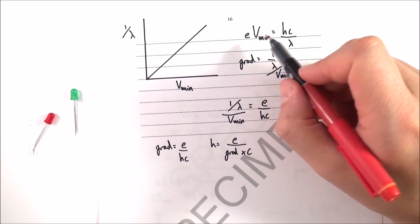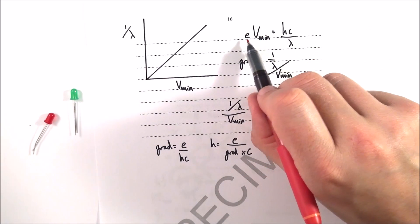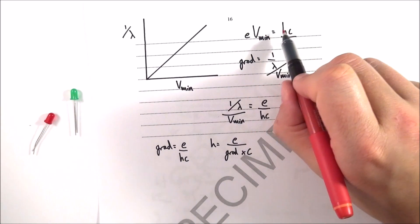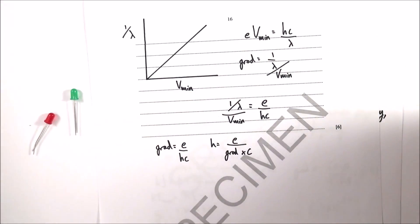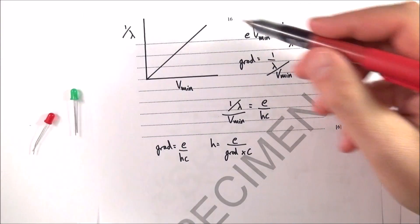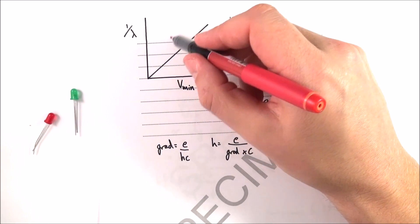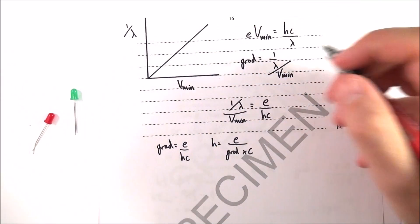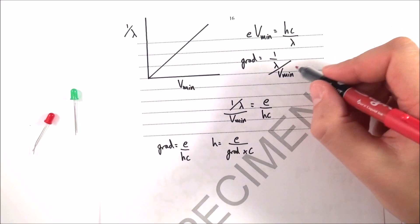Why is that? Because the energy given to the photons, which equals the charge in the electron times vmin - assuming 100% of the energy goes into the electrons - equals hc over lambda or hf. The gradient is going to equal your change in one over lambda over vmin. So my gradient equals one over lambda over vmin.